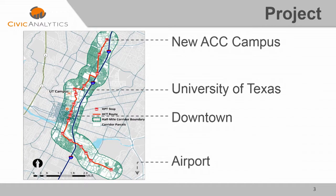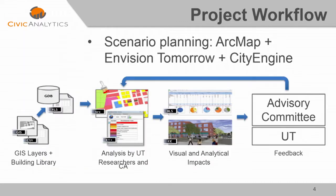The scope of the analysis was basically a half-mile buffer along the urban corridor, reaching from a new Austin Community College campus south through the University of Texas downtown, and then almost to the airport, with the idea that over time it would be extended.